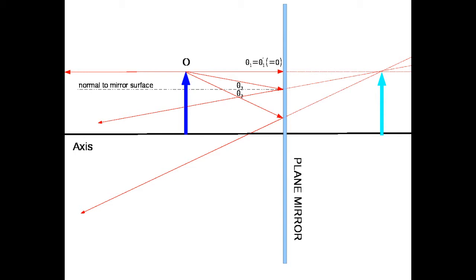We can begin to understand image formation geometrically using a plane mirror by doing something called ray tracing. Ray tracing takes advantage of the geometric properties of light rays. A light ray is merely an arrow that indicates the direction that wave fronts are traveling from an emitted wave of light. We can characterize the motion of the wave merely by looking along a direction, seeing which way the wave fronts are moving, and pointing an arrow in that direction.